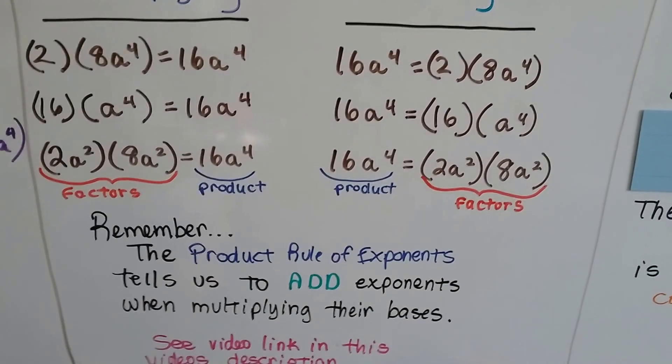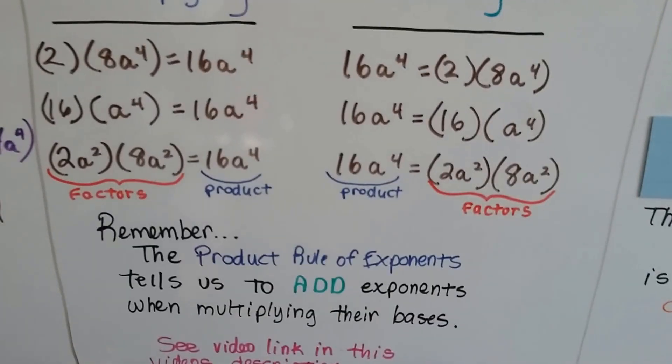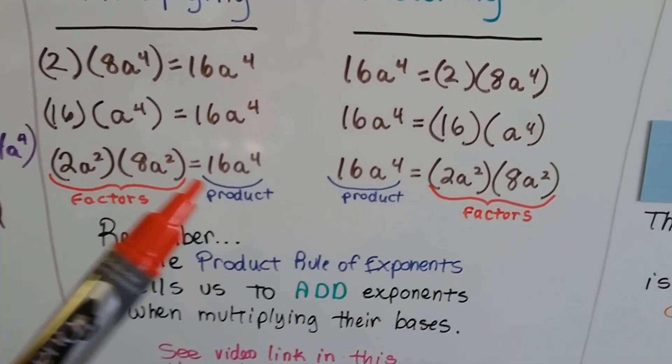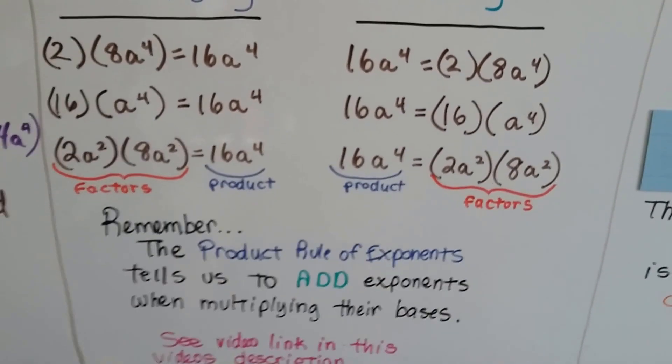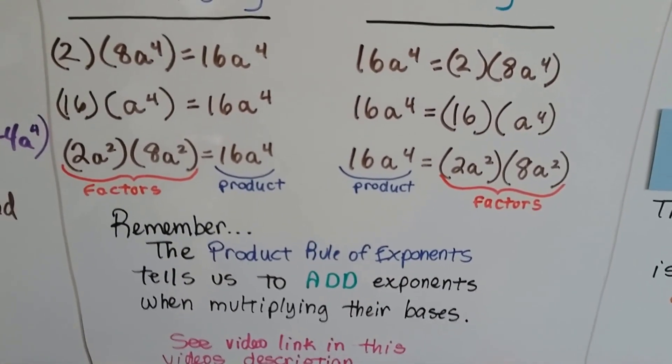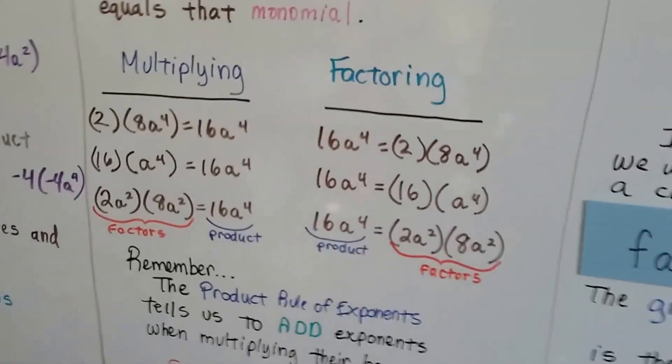Remember, the product rule of exponents tells us to add exponents when multiplying their bases. That's why we can have a squared and a squared to be an a to the 4th power. And there's going to be a link in this video for that. If you're a regular subscriber, I'm sure you've heard it many times.